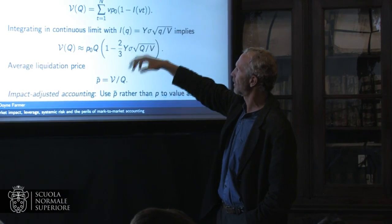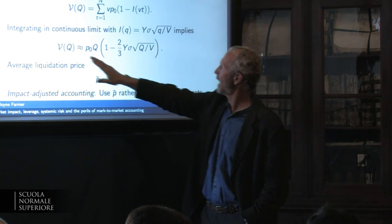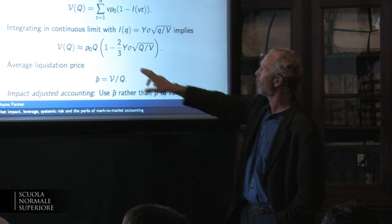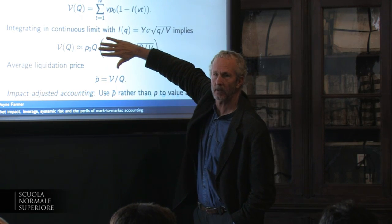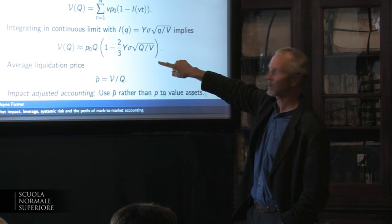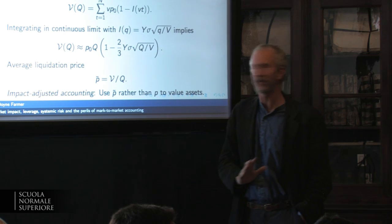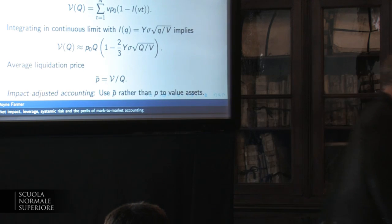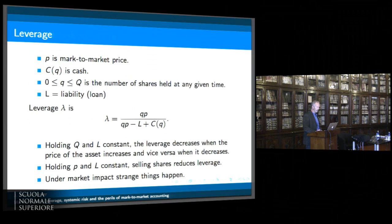The size of each share times the initial price times the amount the price is going down as you sell them off — which you can then do a continuous limit, put in the market impact function, and you end up with a valuation for your portfolio that has the mark-to-market value if you have no impact, but includes this correction term due to the impact. Our proposal is very simple: if you want to value your portfolio, use the average liquidation price rather than the current marginal price, and you're going to get a lower valuation.